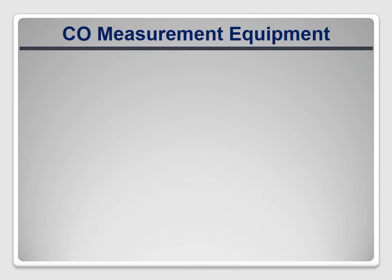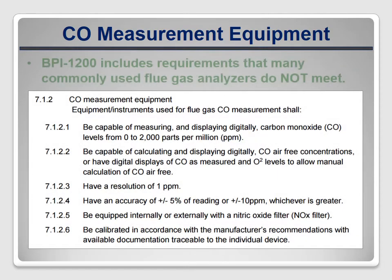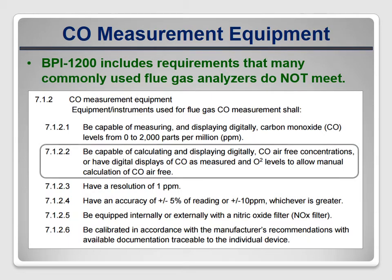BPI 1200 also includes requirements for carbon monoxide measurement that many commonly used models don't meet. First, this standard requires measurement of air-free CO concentration, which requires both a carbon monoxide and an oxygen sensor. Many single-purpose instruments, like the Bacharach Monoxer, don't do this — they only provide as-measured CO. In practicality, this new standard requires a full-function combustion analyzer for carbon monoxide measurements.